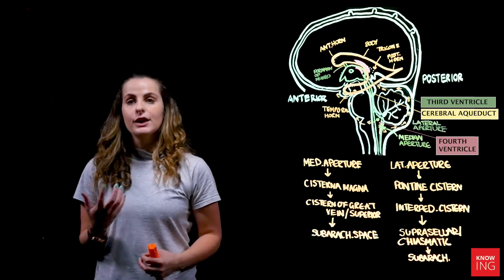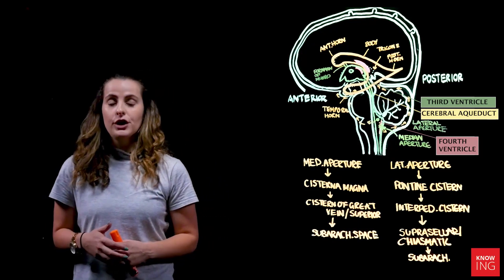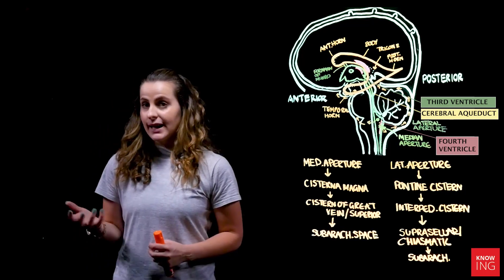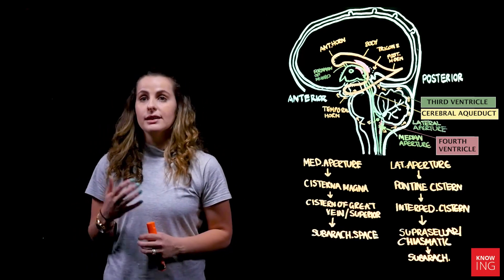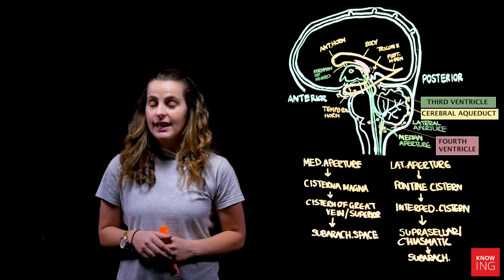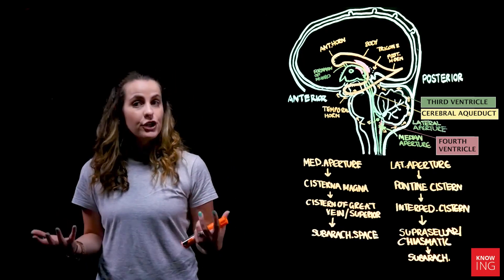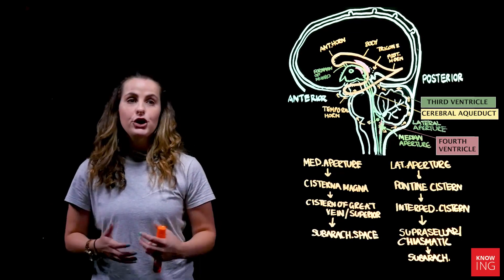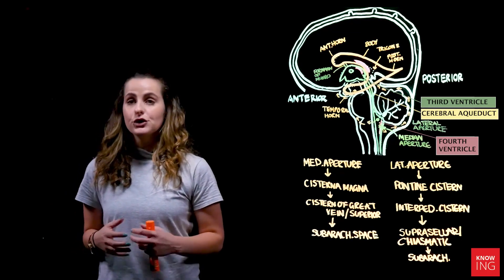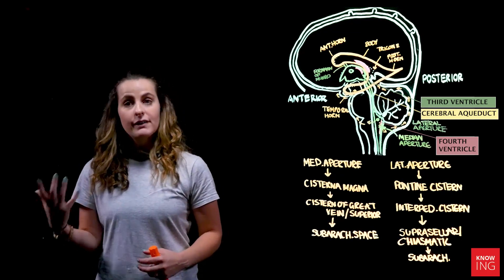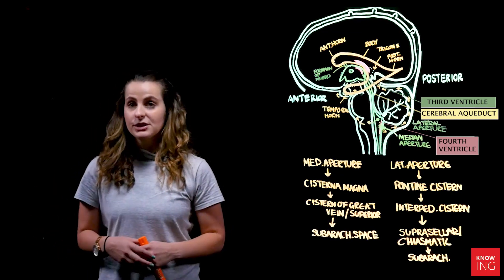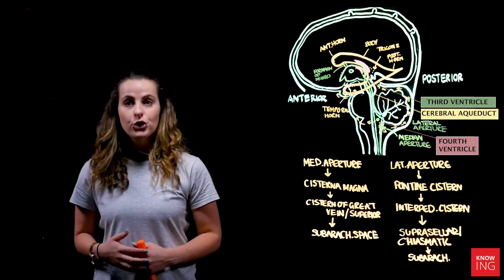The jugular vein returns blood directly back into the superior vena cava. Thank you for your attention, and I hope this overview of the ventricles and the flow of cerebral spinal fluid has been informative for your studies.